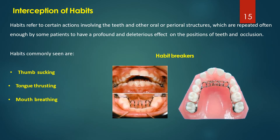Regarding habits such as thumb sucking, tongue thrusting, mouth breathing, nail biting, and pencil biting — you will need to intercept and stop such habits from having deleterious effects. A separate lecture will cover each habit in detail, including clinical features and treatment. Briefly, certain habit breakers can be used to intercept and stop these habits from causing deleterious effects on the dento-alveolar or perioral musculature.